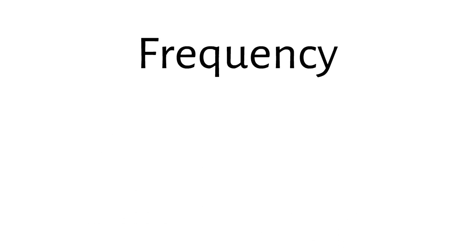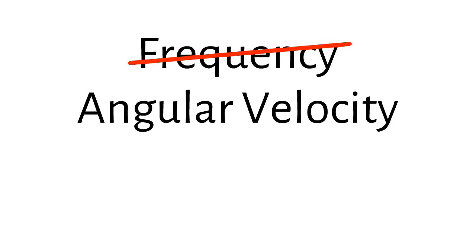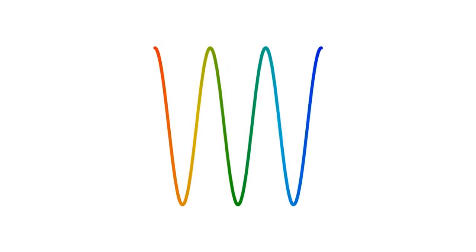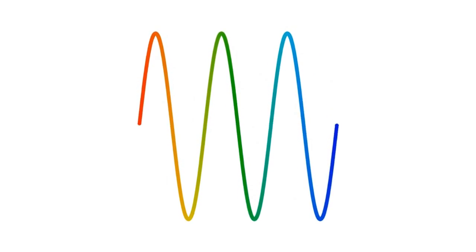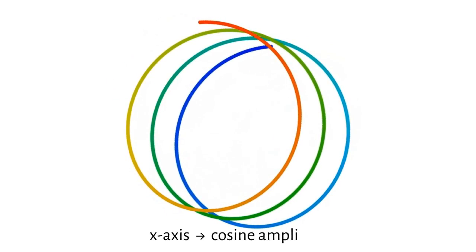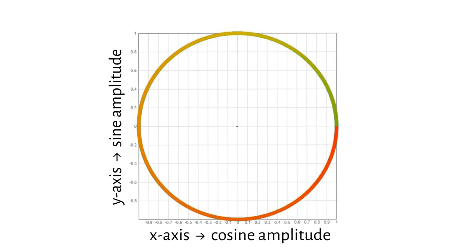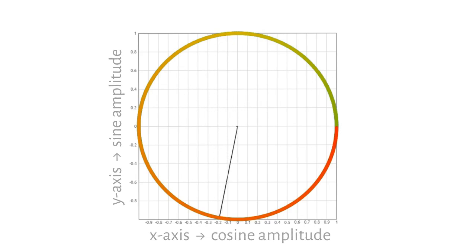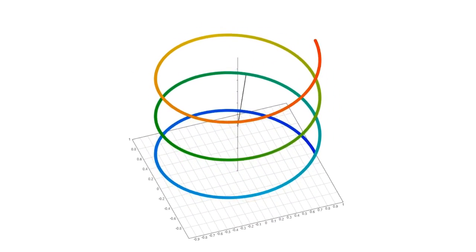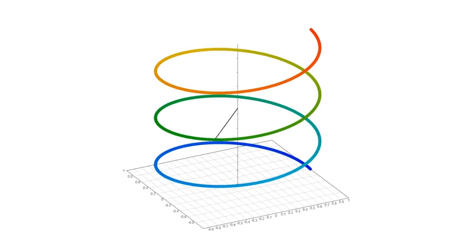In order to answer this question, we need to look at frequency in a slightly different way. Instead of calling it frequency, you may have heard the term angular velocity, often represented by the symbol omega. This is especially useful when we consider the complex plane, which combines the cosine and sine components of a signal into one image. The x-axis represents the amplitude of the cosine component at any moment in time, and the y-axis represents the amplitude of the sine component. The frequency of the sine and cosine waves can be thought of as the speed of rotation of a line in the middle of the circle — this is the angular velocity. If we use the z-axis to plot the angle of the line, then our circle becomes a spiral. The speed the line moves up the z-axis is its angular velocity.